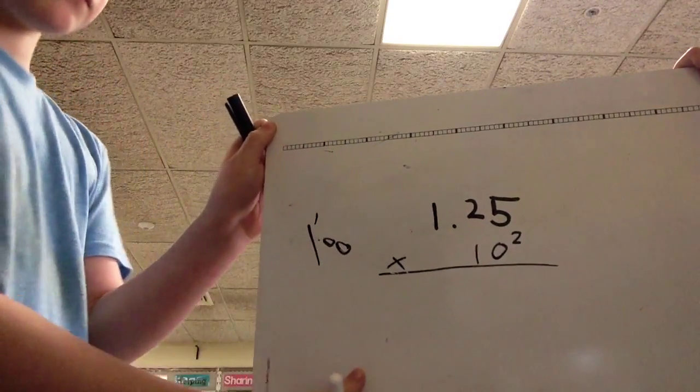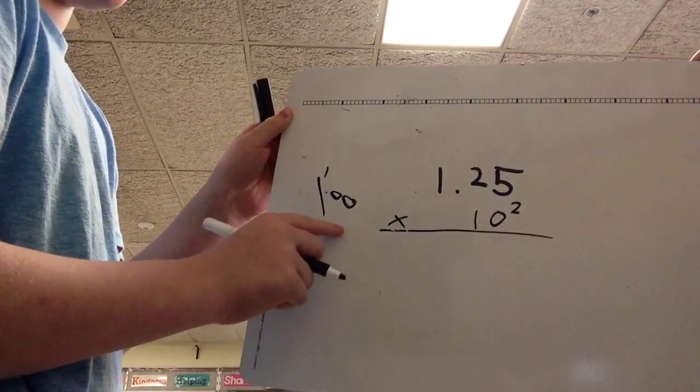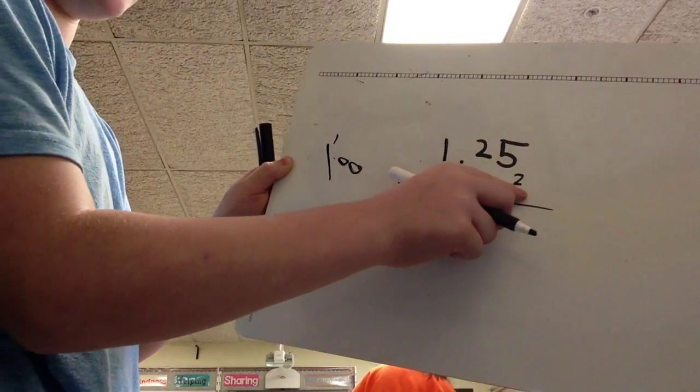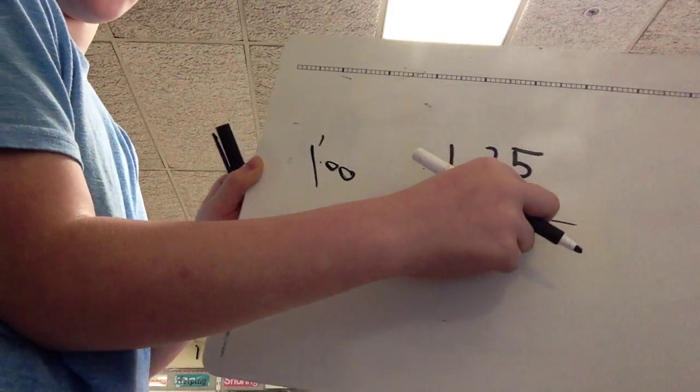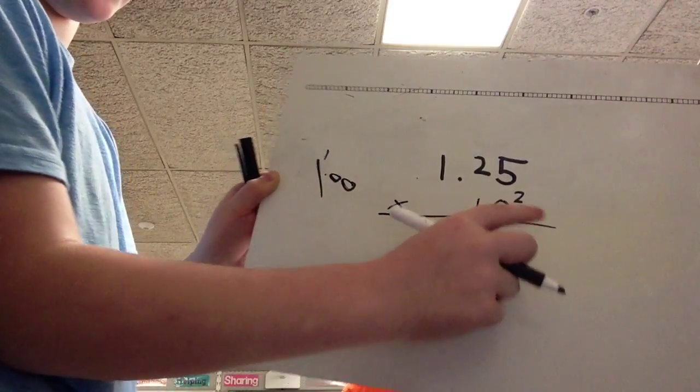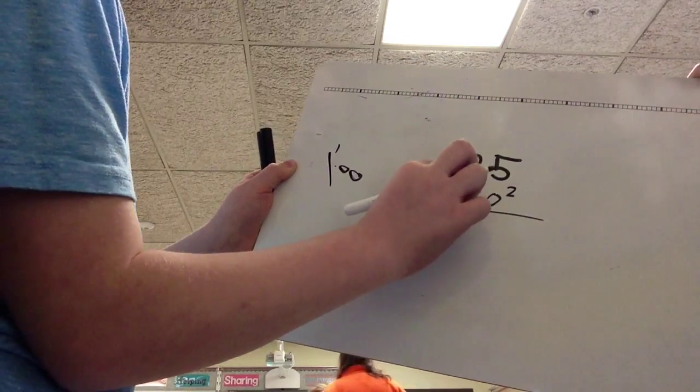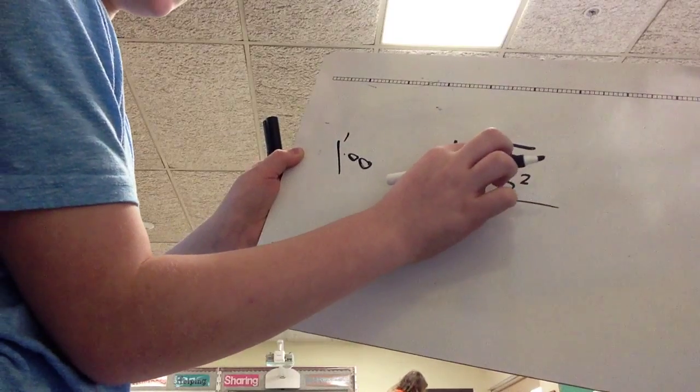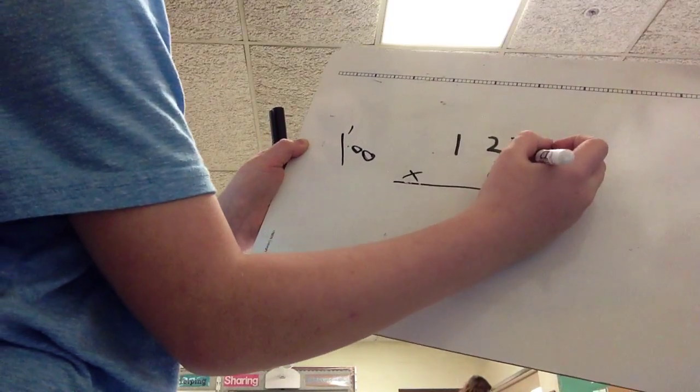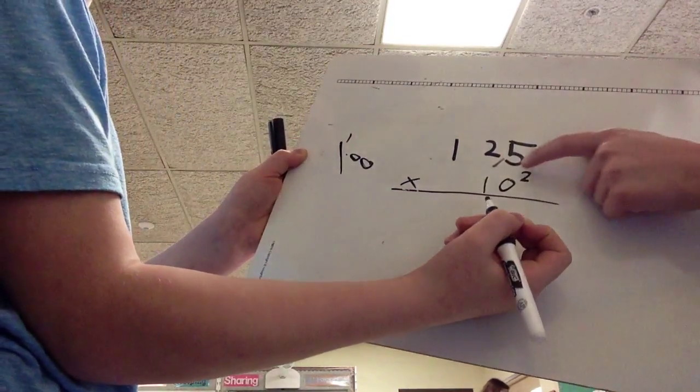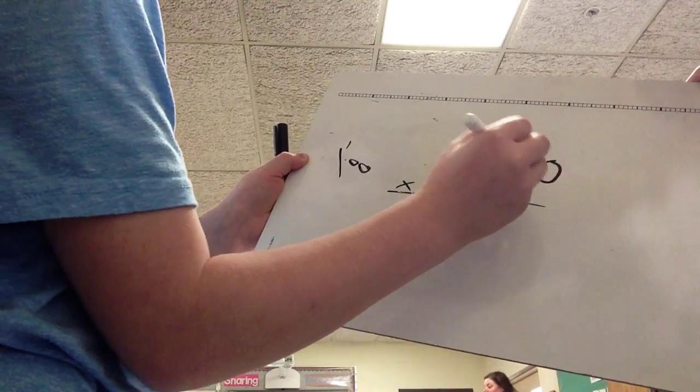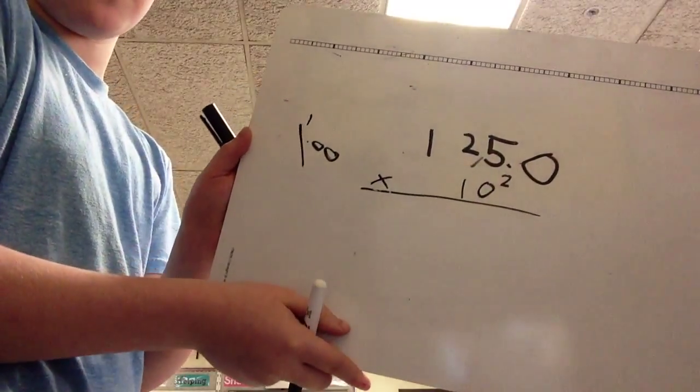And then we're going to want to move the decimal two times over to the right, because there's 2 there. So move that one time over there, move that one more time over there. I should probably add a 0 over here, and there's your answer.